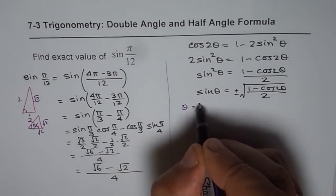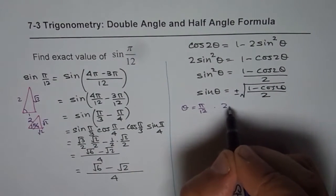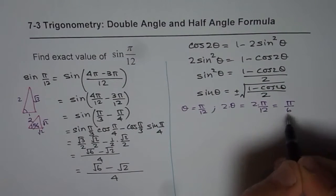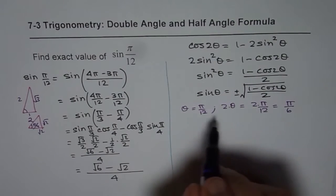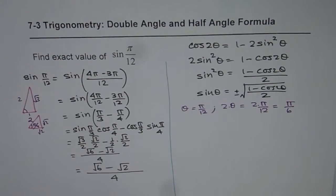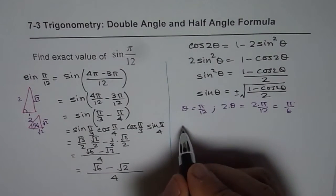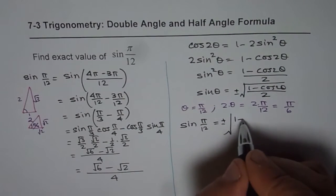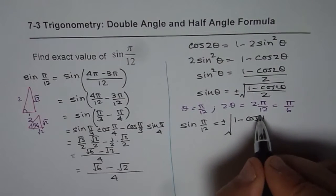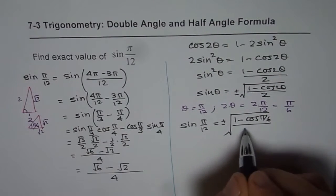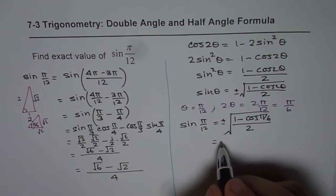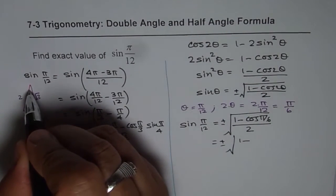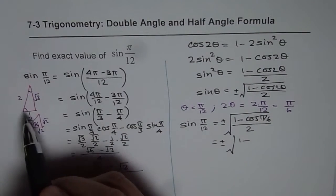If θ = π/12, then 2θ = 2 × π/12 = π/6. Now substituting θ = π/12, we get sine(π/12) = ±√((1 - cos(π/6))/2). Looking back, π/6 gives cos(π/6) = √3/2. So we get ±√((1 - √3/2)/2).